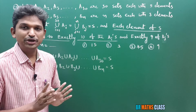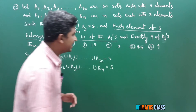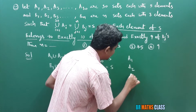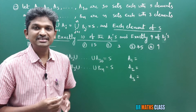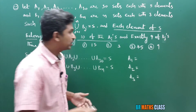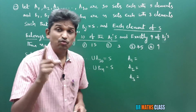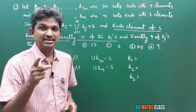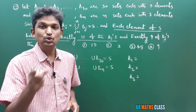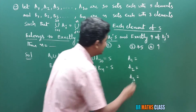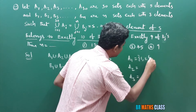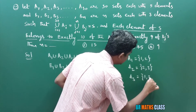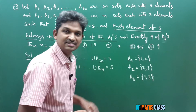That example I am going to write — just observe. What I said: I am going to take 3 sets: A1, A2, A3. Each set is having 2 elements. In what way am I writing these elements? Such that each element of S is exactly in 2 of the Ai's. I'll take the example like this: A1 = {1, 2}, A2 = {2, 3}, A3 = {1, 3}. I have taken 3 sets like this.